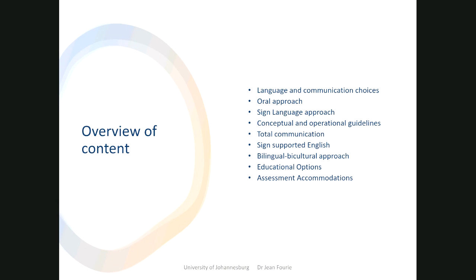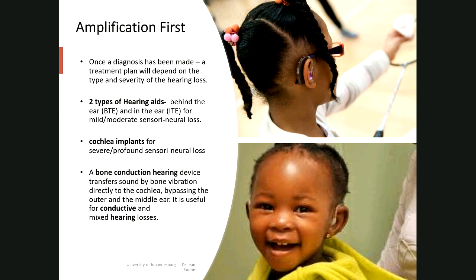I want to start by looking at the conceptual and operational guidelines. These are guidelines the Department of Education has issued, acknowledging that all learners, regardless of their impairment — whether a hearing impairment or some other kind — should be assisted and helped in schools, either in full service schools or in special schools. The rest of the slides will look in more detail at what we can do as educators to support learners who have hearing problems.